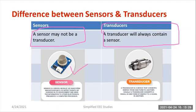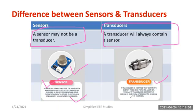A sensor is a device, module, or subsystem whose purpose is to detect events or changes in its environment and send information to other electronics or a computer process. A transducer, on the other hand, is a device that converts energy from one form to another. Usually a transducer converts a signal in one form of energy to another form — for example, mechanical or non-electrical quantity is converted into electrical quantity. A load cell can measure the weight of a load, outputting the result in terms of voltage or current.